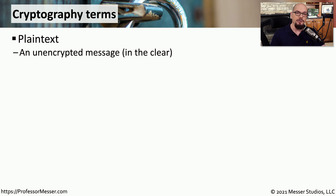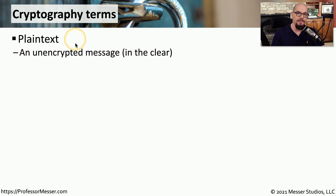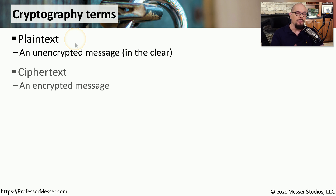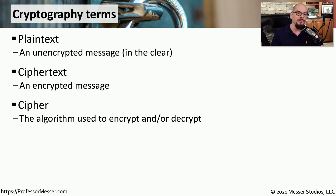There are a number of terms that you'll hear used with cryptography. The first one is plain text — this is the unencrypted message that you usually start with, often referred to as the in-the-clear message. When we encrypt this plain text, it's called cipher text, because we used a cipher to encrypt and protect the information contained in that plain text.